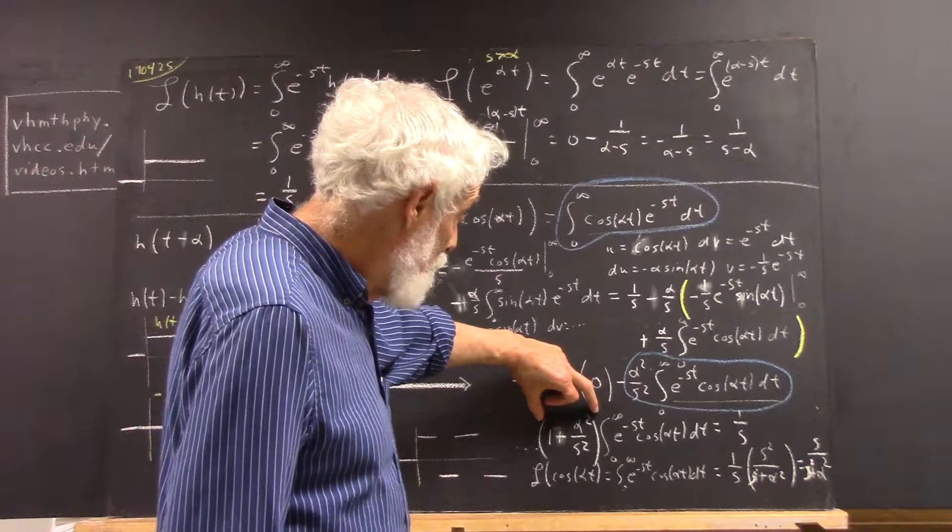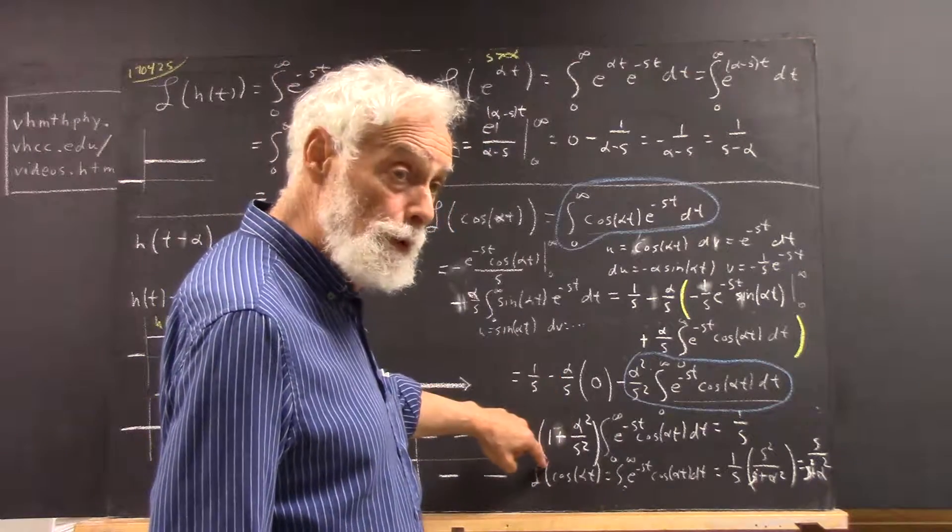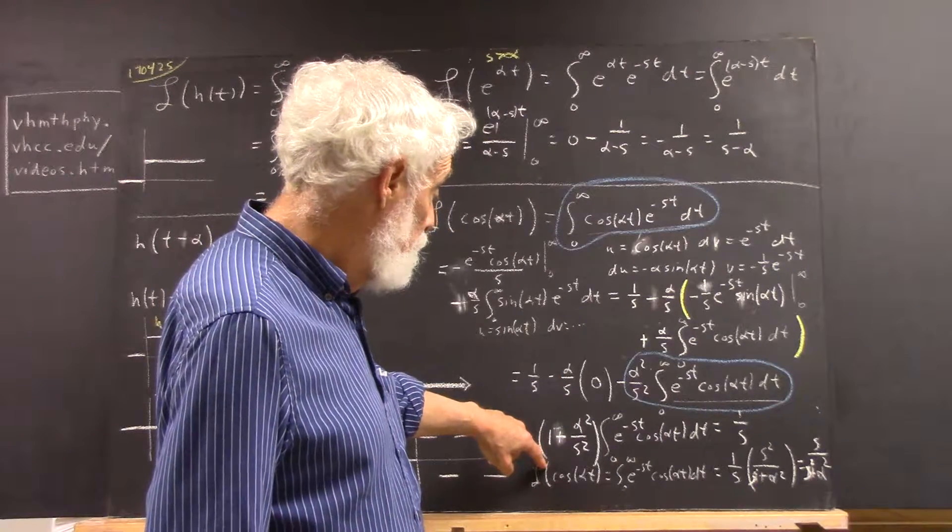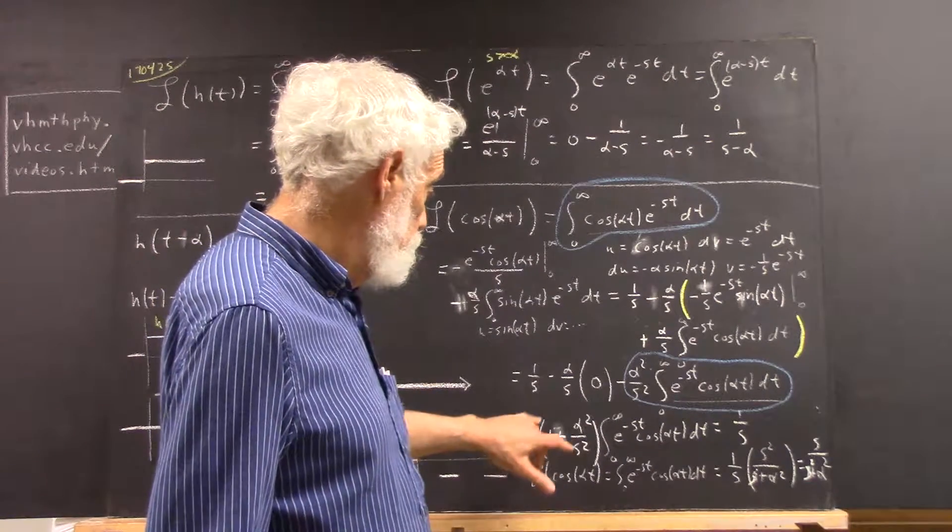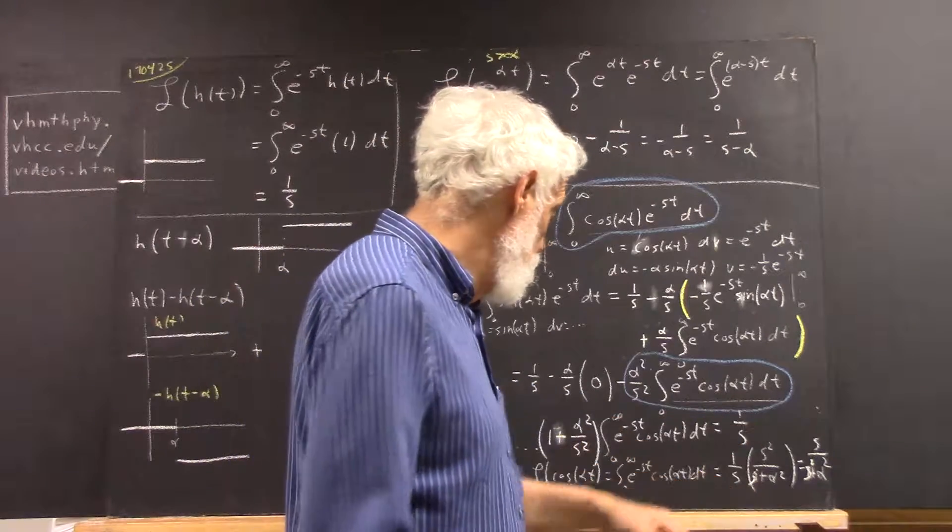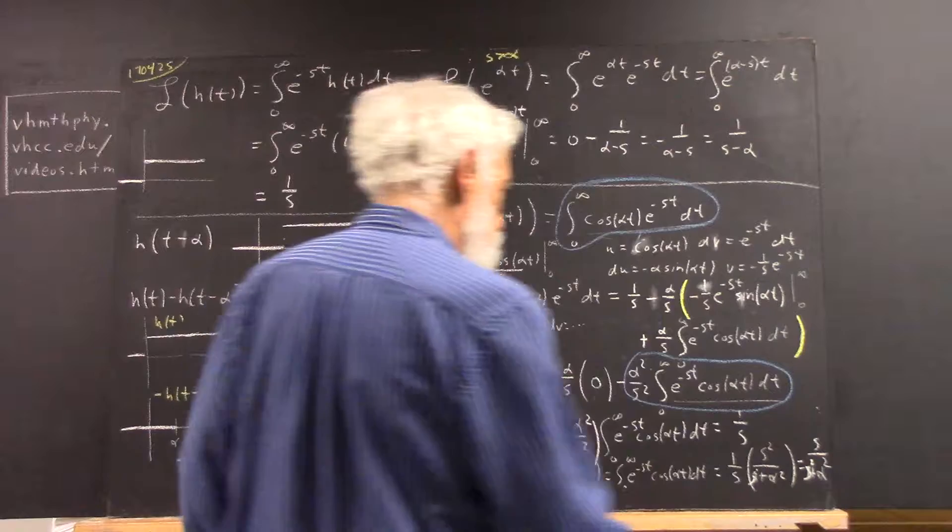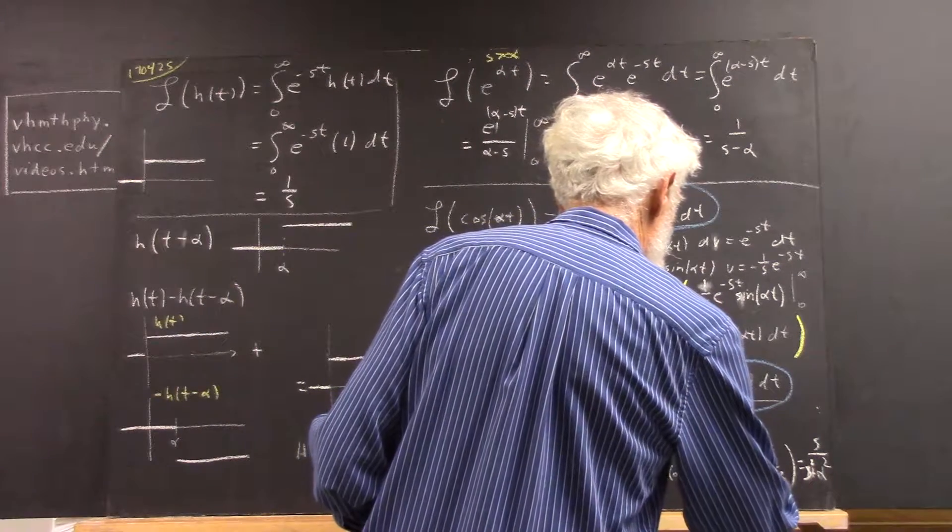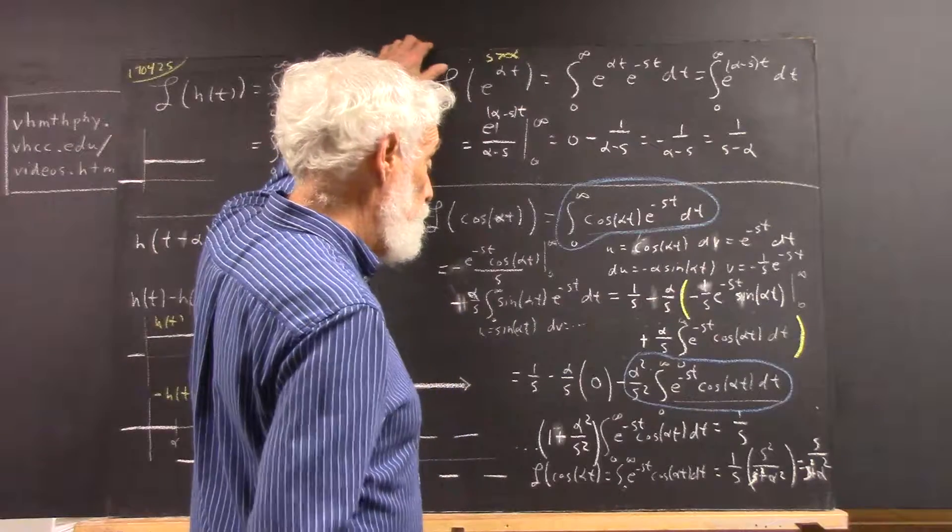This is, well, common denominator is s squared plus alpha squared over s squared. So, that means we're going to multiply both sides by the reciprocal, which will be s squared over s squared plus alpha squared. Now, the s squared got really garbled here. So, we really have a hard time seeing that.